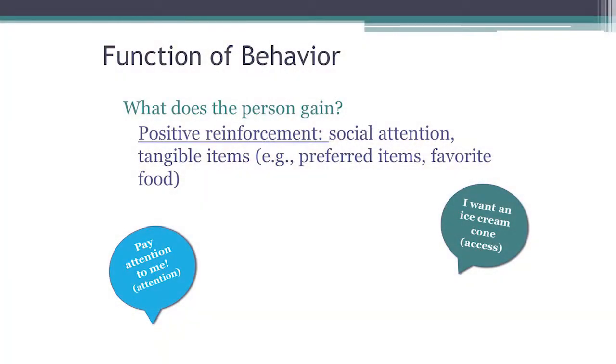We talk about reinforcement in a few different categories. With our assessments, we identify whether it is positive reinforcement, negative reinforcement, or automatic. Positive reinforcement refers to things in the environment — responses that result in gaining things — so maybe you're gaining attention, or gaining access to items or activities.